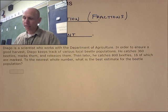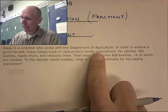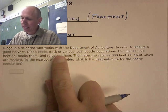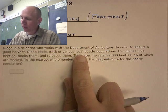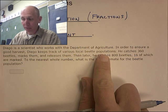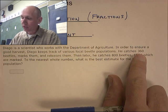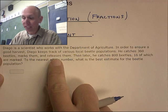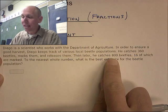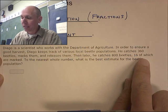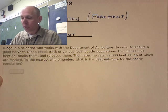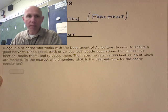Diego is a scientist who works with the Department of Agriculture. In order to ensure a good harvest, Diego keeps track of various local beetle populations. He catches 360 beetles, marks them, and releases them. Then later, he catches 800 beetles, 16 of which are marked. To the nearest whole number, what is the best estimate for the beetle population?